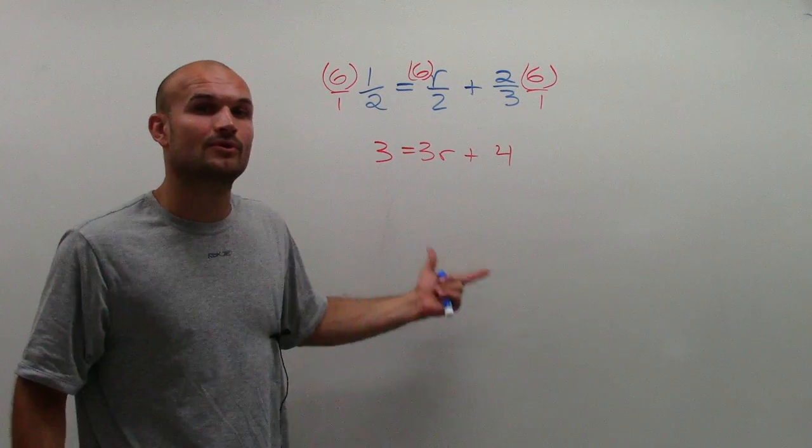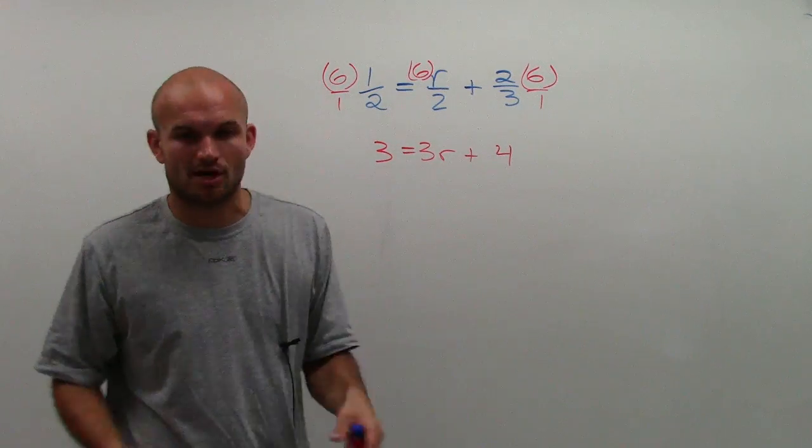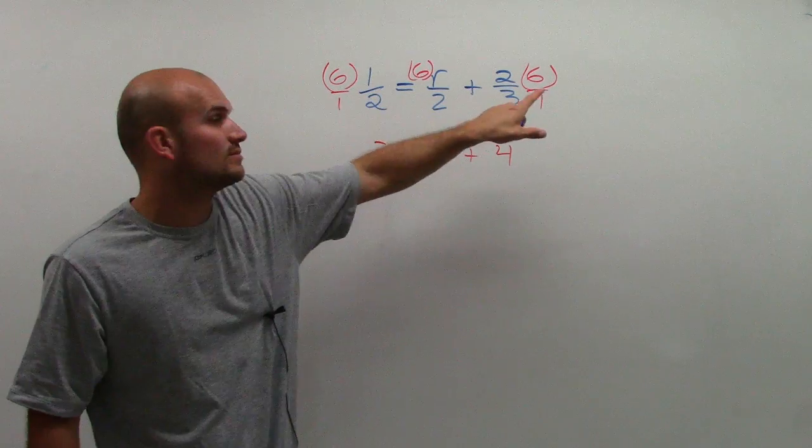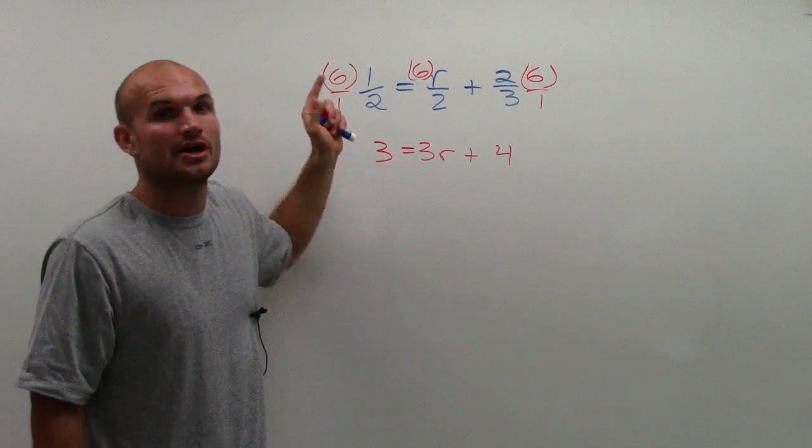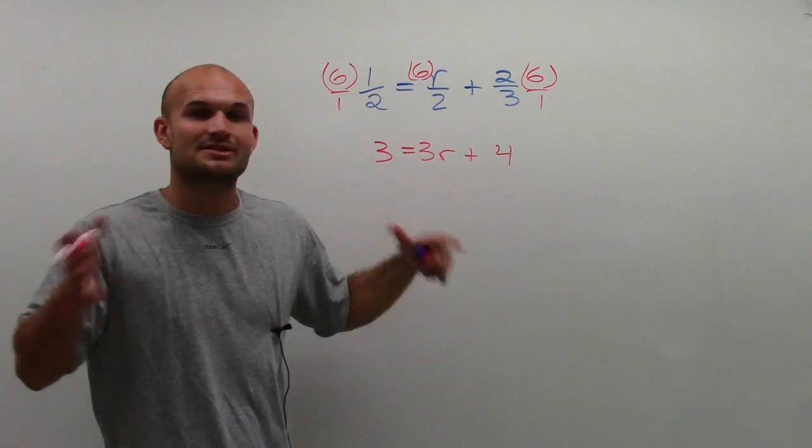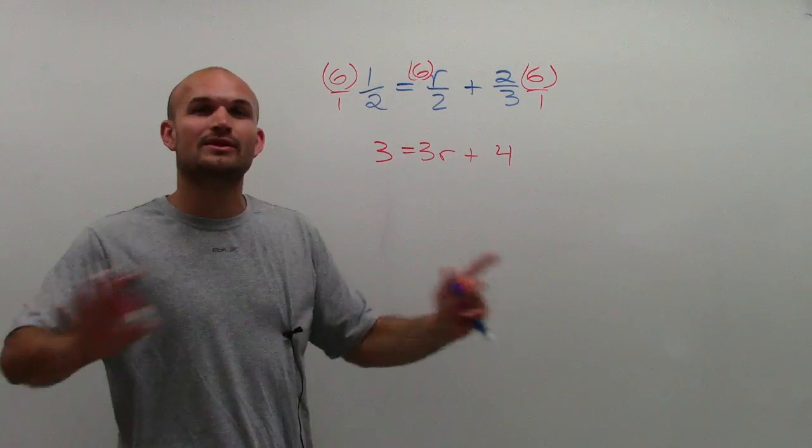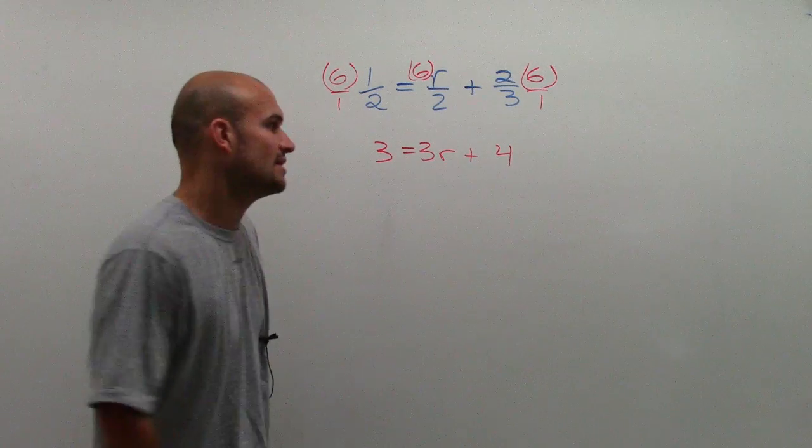So there we go. Now, I have a two-step equation that's a lot easier for me to solve because with fractions, since these don't have the same denominators, remember, since you're going to subtract on both sides, you would have to get the common denominator anyways just to subtract them. So I think it's a lot easier to do this off the bat, get rid of the fractions, and now let's just solve this two-step equation.